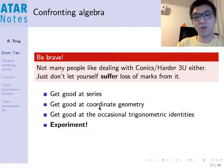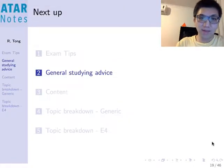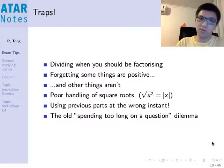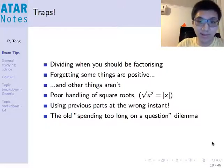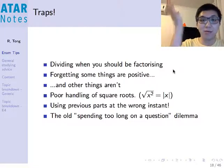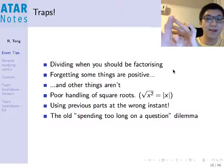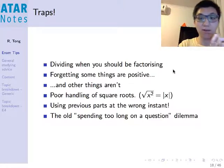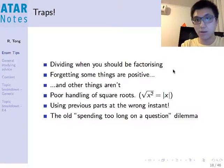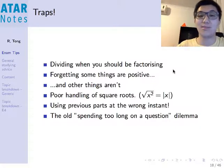Some useful things to keep in mind when dealing with algebra. The last exam technique I want to talk about is the traps. Dividing when you should be factorising can be a big one — sometimes you're tempted to cancel out terms when really you should move something to the other side and factorise, especially when solving equations. Even 4-unit students can walk into this mistake.